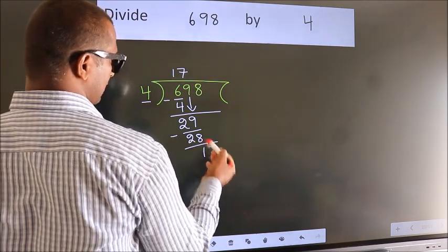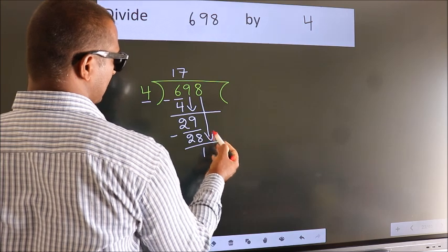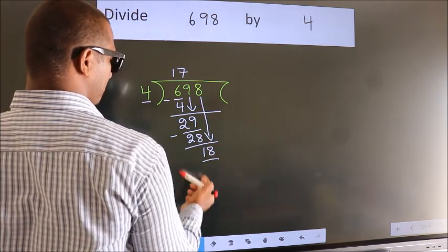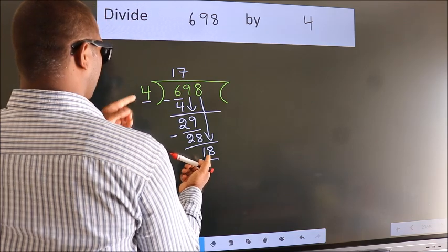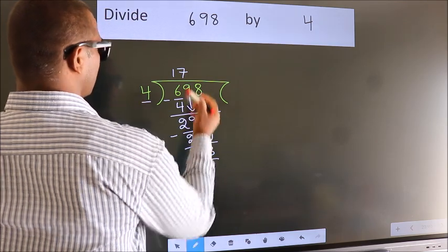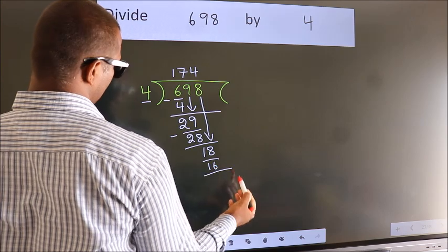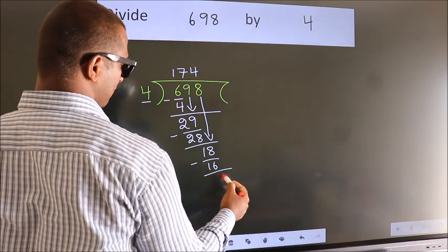After this, bring down the beside number. So, 8 down. So, 18. A number close to 18 in the 4 table is 4 fours, 16. Now, we subtract. We get 2.